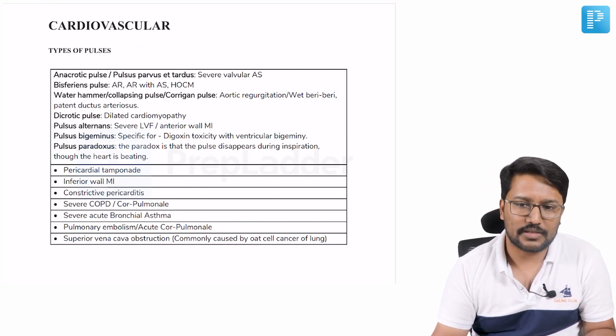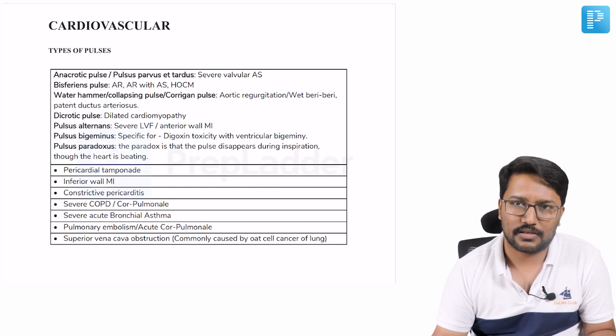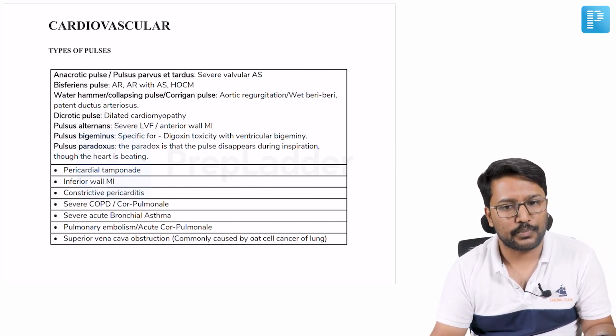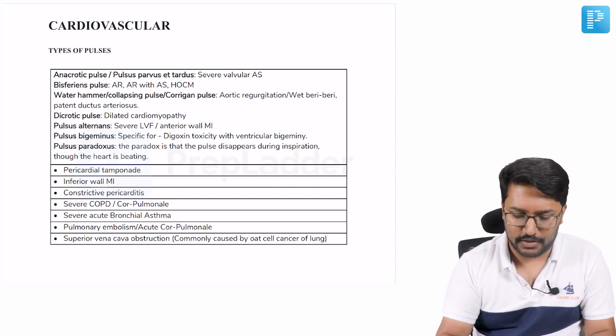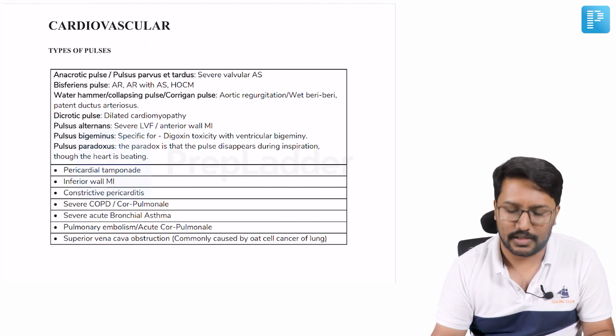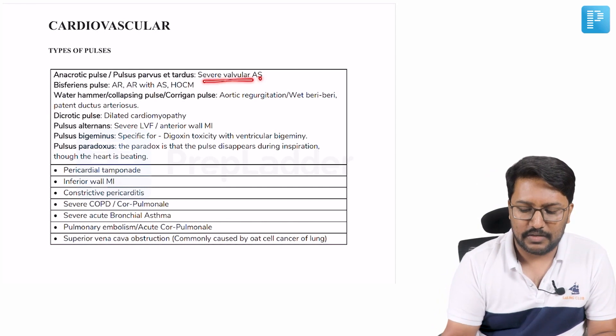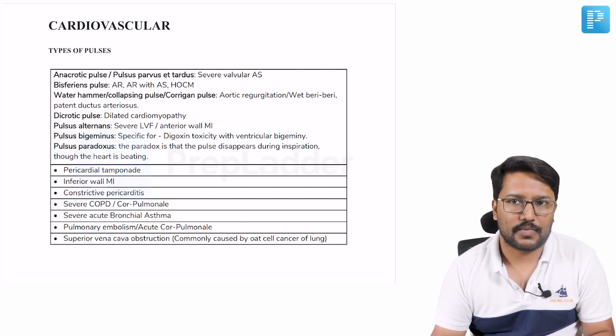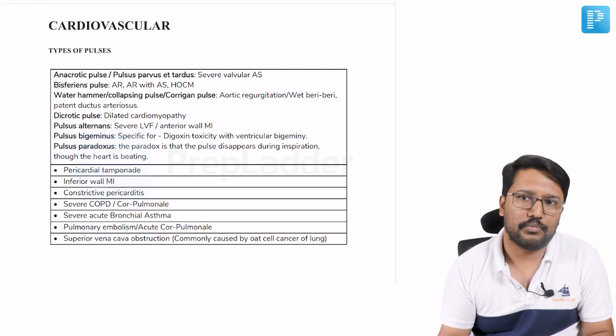Important MCQs that have been asked in the past are: where do you see anacrotic pulse? Where do you see pulsus parvus et tardus? We know that anacrotic pulse is seen in severe valvular aortic stenosis. So slow rising, late peaking pulse.